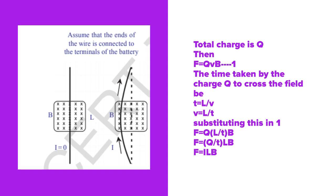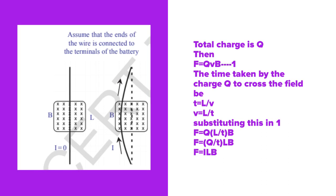Substituting this in equation 1, then F = Q(L/t)B. The first equation is F = QvB, so F = Q times v, which means L/t, times B.